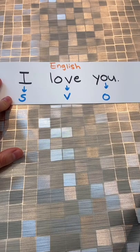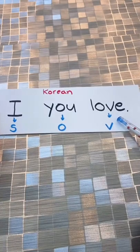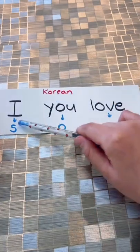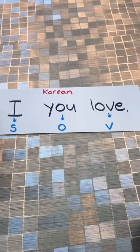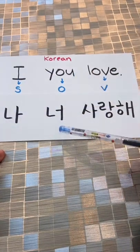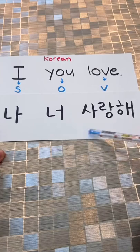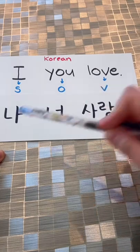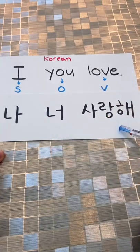But in Korean, you say the verb last. So you would say I, you, love. I is 나, you is 너, love is 사랑해. So you would say 나 너 사랑해.